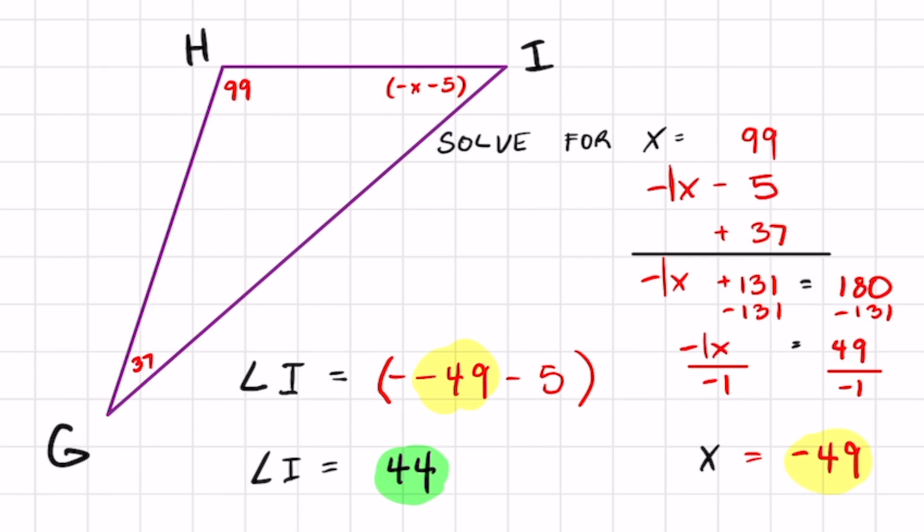Some people be freaking out over here because your answer is negative, and then you're gonna start saying, well, you can't get a negative answer, you can't get a negative angle. That does not mean that that's the measurement of this angle. That is just the value of x that you're gonna plug in for this expression. So you're gonna get one of those double negatives right there, and negative negative 49 is 49 minus 5, and angle I will then be 44.